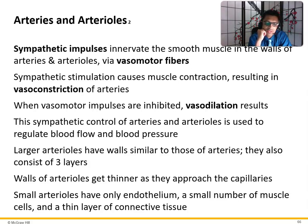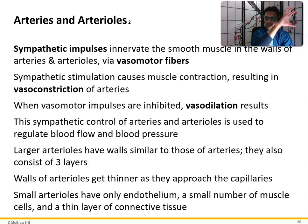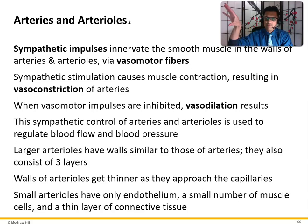Larger arterioles have walls similar to those of arteries, also consisting of those three layers: externa, intima, and tunica media. Walls of arterioles get thinner as they approach the capillaries. Small arterioles have only endothelium, a small number of muscle cells, and a thin layer of connective tissue. So again, it goes arteries, then arterioles, then capillaries, then venules, then veins.